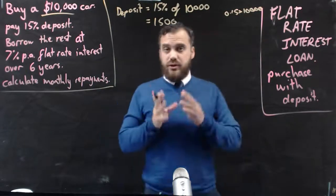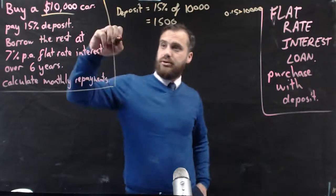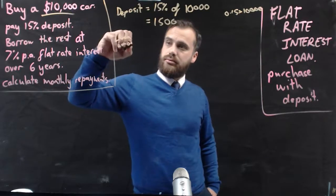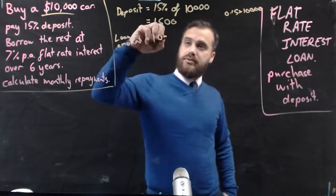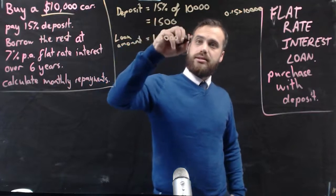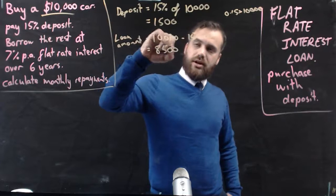Okay, so if I know the deposit, I'll know how much I borrow. So loan amount is equal to the price of the car, 10 grand, minus the deposit, which is $1,500, which is $8,500.